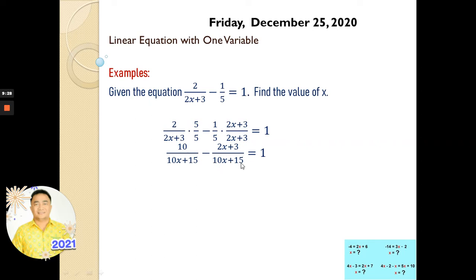As well as with this side, the same. And we can combine these two terms because our denominators are the same. So we can write it like this. From negative 2x — this one is positive — so positive and negative becomes negative. Negative times positive is negative. So we have 10 minus 2x minus 3 over (10x plus 15) is equal to 1.